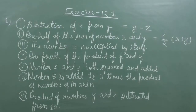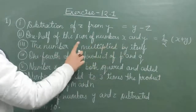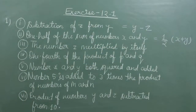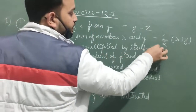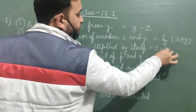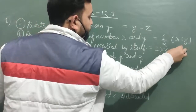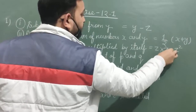Third question: the number z multiplied by itself. So z multiplied by z is z squared. The answer is z squared.